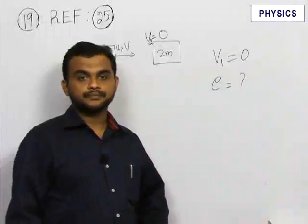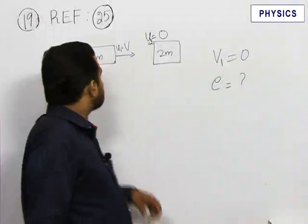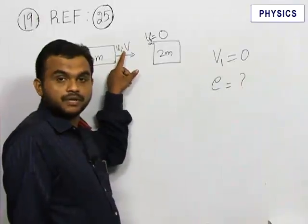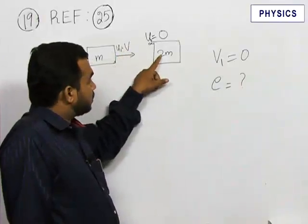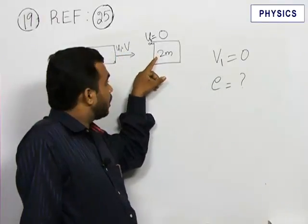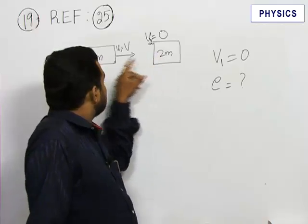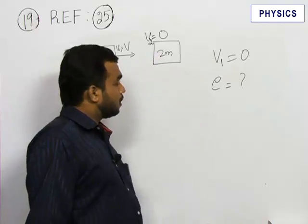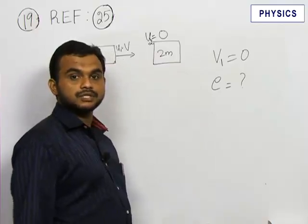Please refer to problem number 25. In this problem, a block of mass m moving with a velocity v collides with another block of mass 2m. After the collision, the lighter block comes to rest. Find the coefficient of restitution.